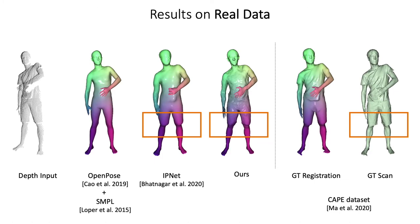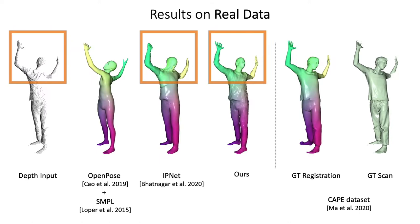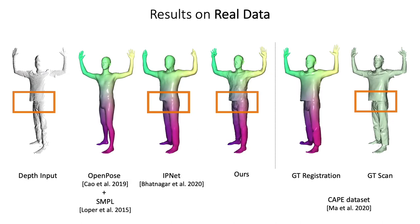Our NPMs allow for consistent tracking even under strong occlusions, while effectively capturing clothing details, as shown here.